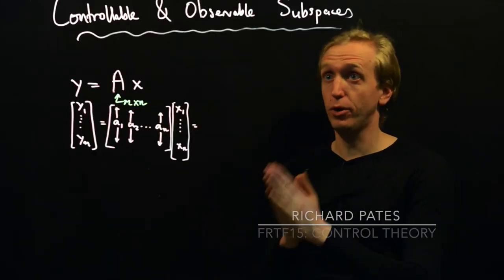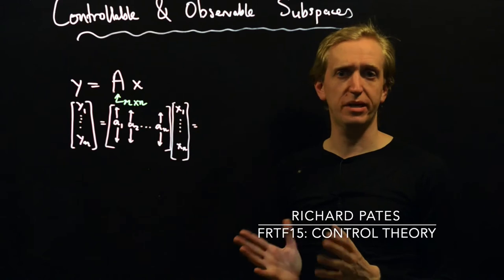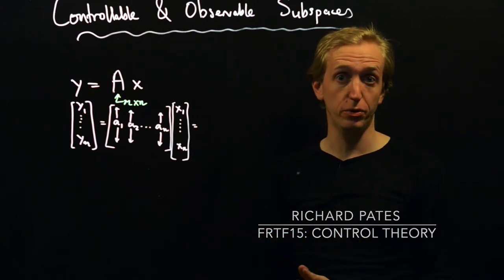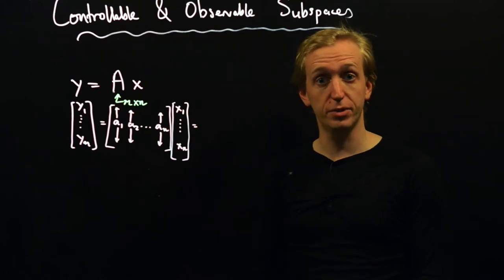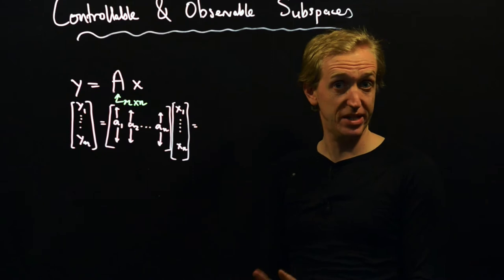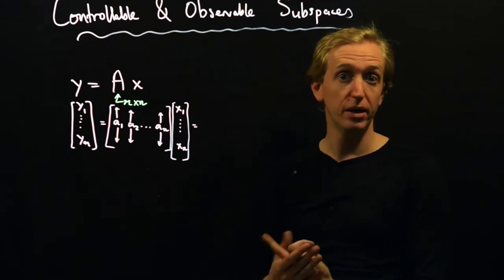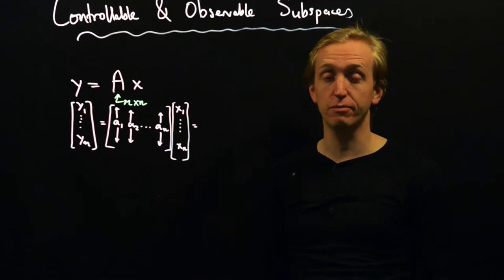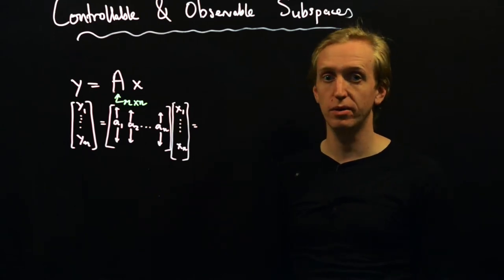Our first topic is controllable and observable subspaces. We're going to take a closer look at state-space models which are not controllable or not observable, and try to identify which parts of the state space can't be controlled or can't be observed, relating these to properties of the controllability and observability matrices we saw last time.